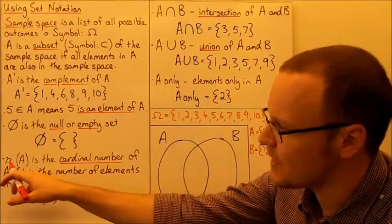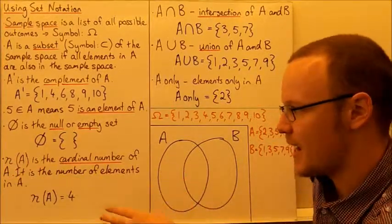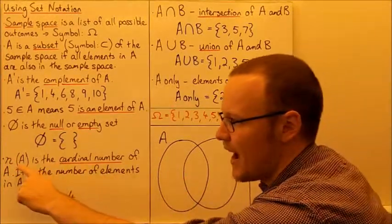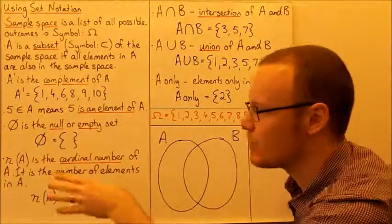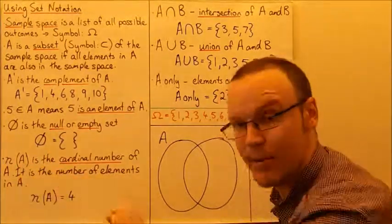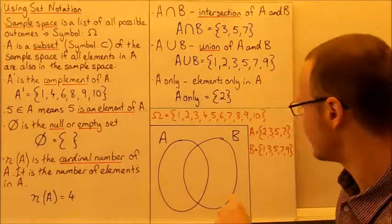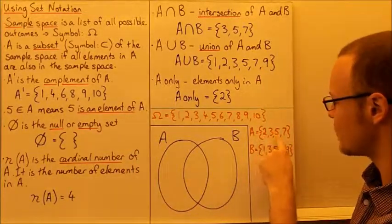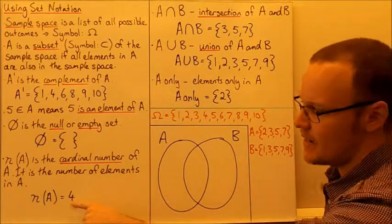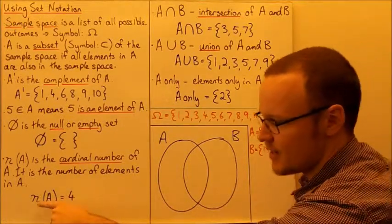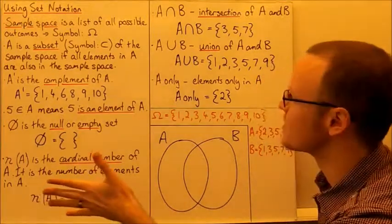This cursive N, then in brackets A, is called the cardinal number of A — the cardinal number of whatever is in the brackets. That's the number of elements in A. If we count the elements in A: 1, 2, 3, 4 — there are 4 elements in A. So we can say the cardinal number of A is 4.